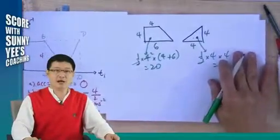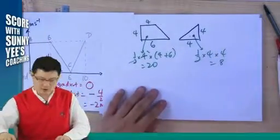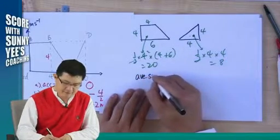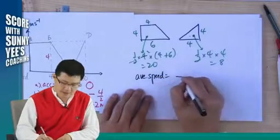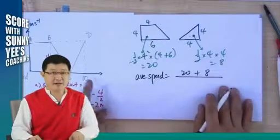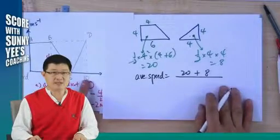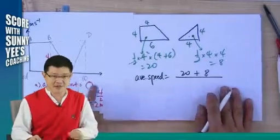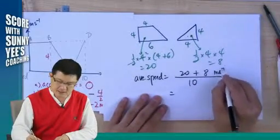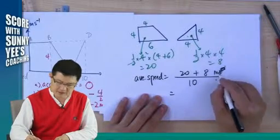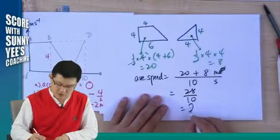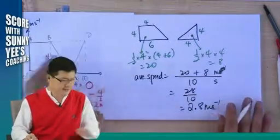So what is the total distance? Your total distance is you add up both together. My total distance, the average speed. The average speed will be total distance. Add up these two together. Divide by total time. Look at my finger. What is the time taken? The total time is 10 seconds. This is meter. This is second. So 28 over 10. 2.8 meter per second.